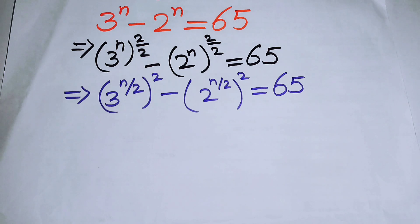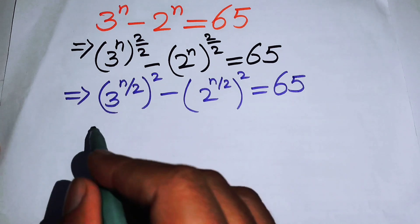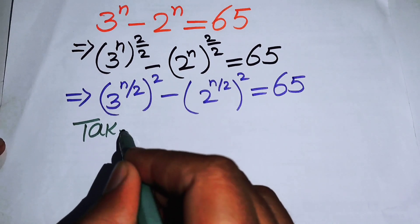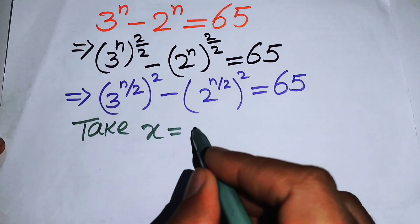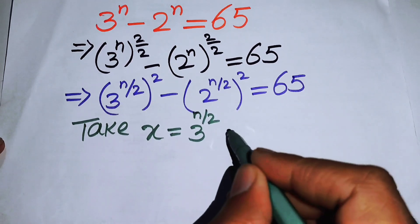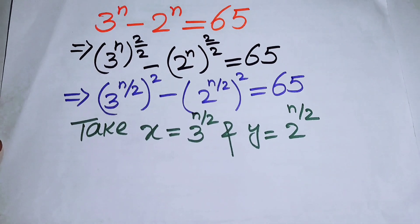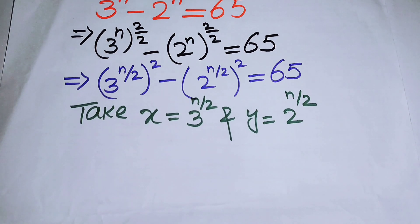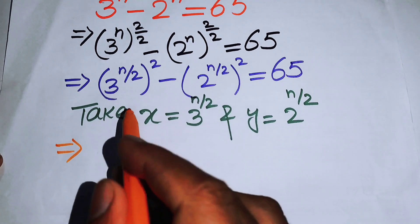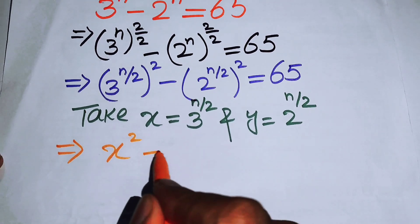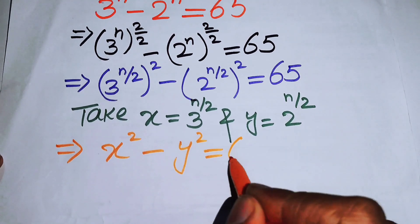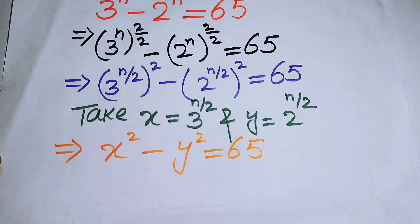In the next step, we convert this exponential equation into polynomial form using substitutions. We take x equals 3 to the power of n over 2, and y equals 2 to the power of n over 2. After substitution, our equation becomes x squared minus y squared equals 65.